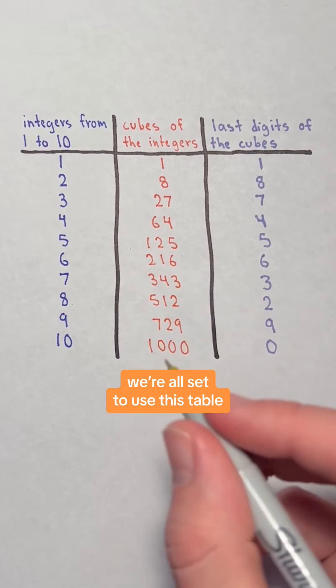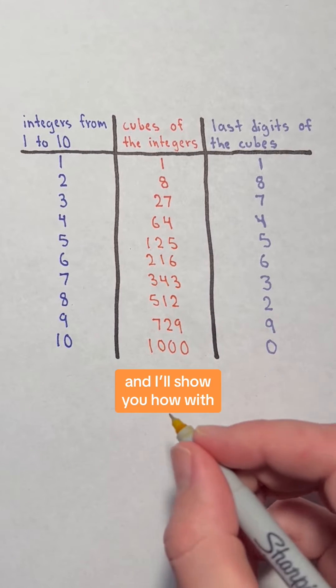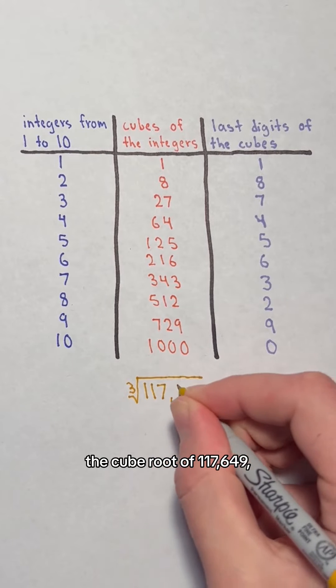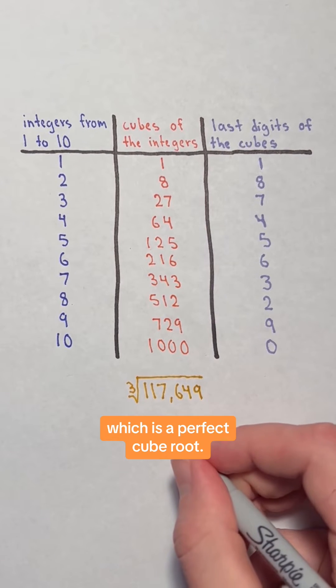Now we're all set to use this table to find perfect cube roots. I'll show you how with the cube root of 117,649, which is a perfect cube.